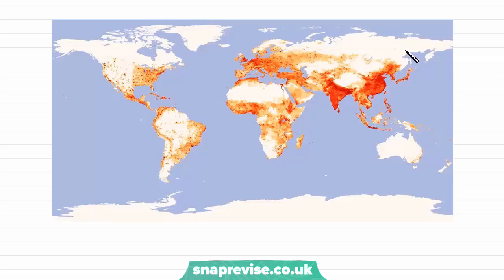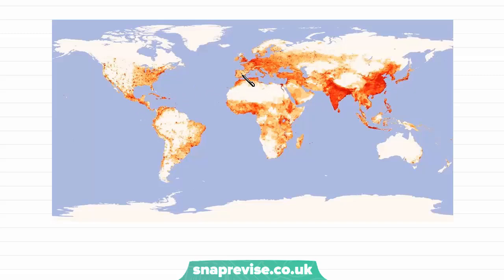We can also look at the links between the availability of natural resources and population density, with places like China and India having lots of natural resources to support very large populations. The reasons for high population density in Europe include the Industrial Revolution and advances in development and technology facilitating the growth of a larger population — the same is true in America. Although America's population is more sparsely distributed across the country compared to Europe and Asia, where a much darker red shows a much higher population density.